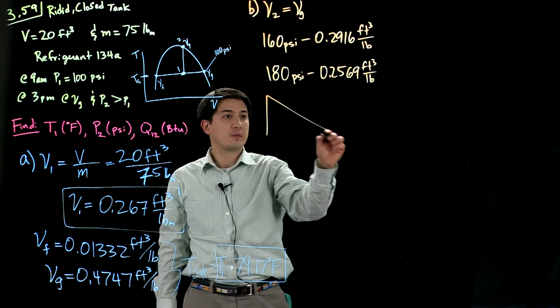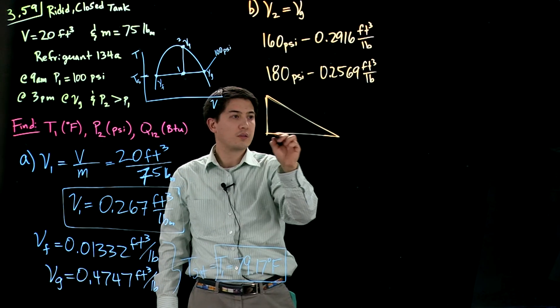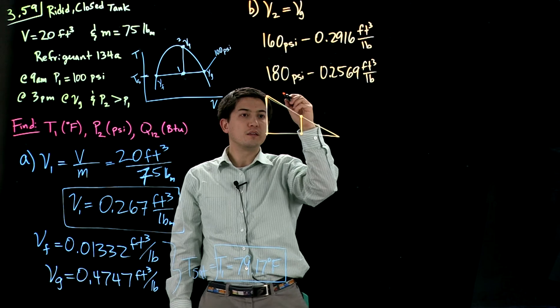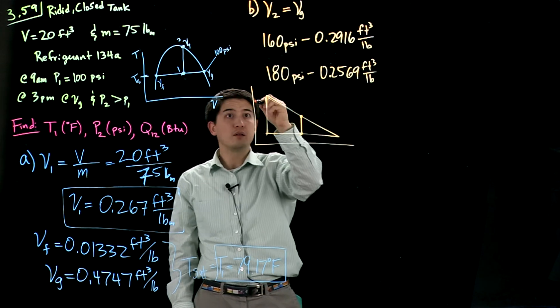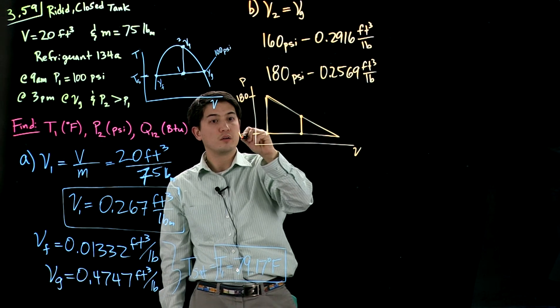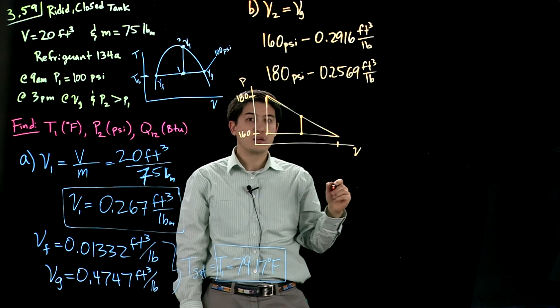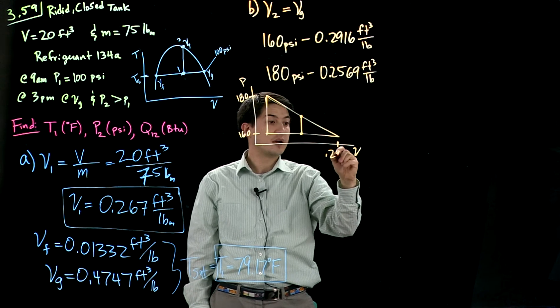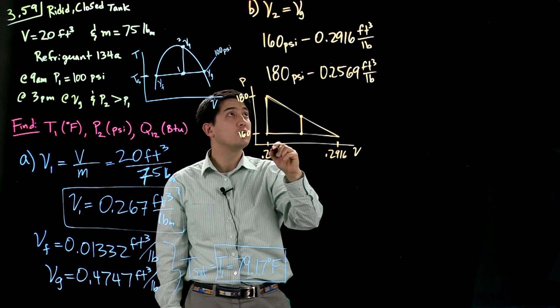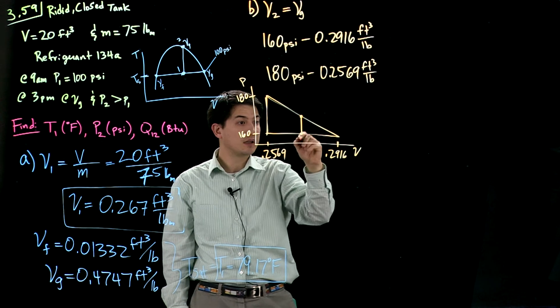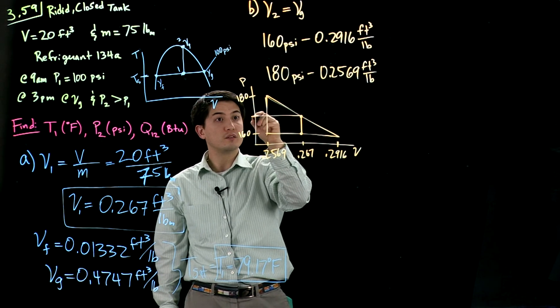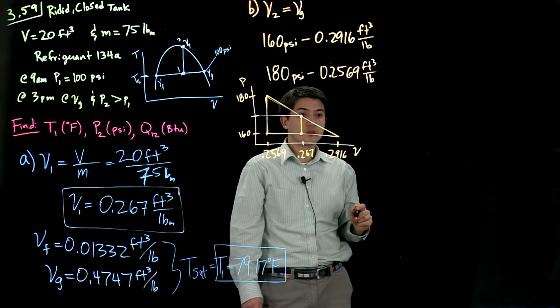So we can set up our triangle if you need to, if this helps. Say that this point, this is pressure, specific volume, 180, 160. At 160, we're at 0.2916. At 180, we're at 0.2569. Somewhere in here, we're at 0.267. And we want to find this value here.